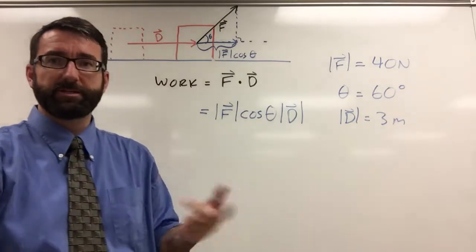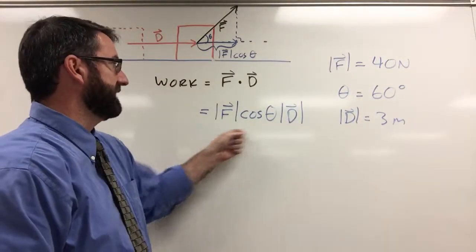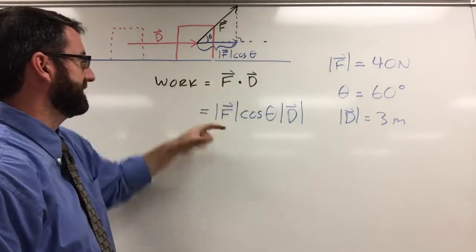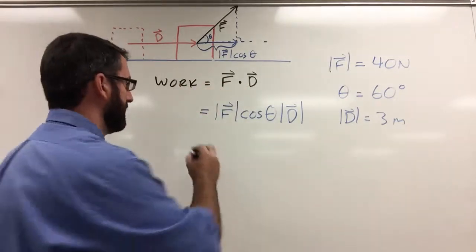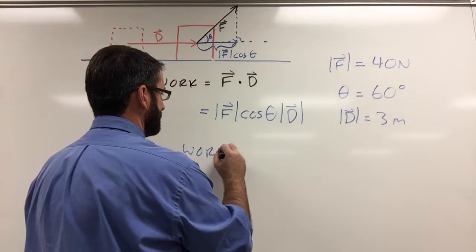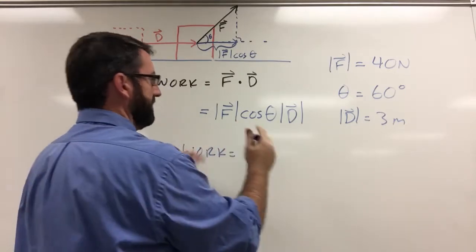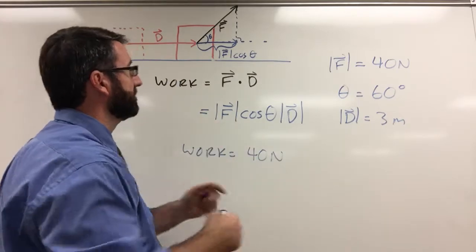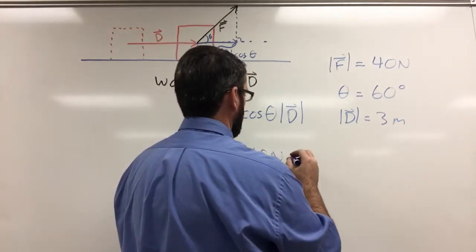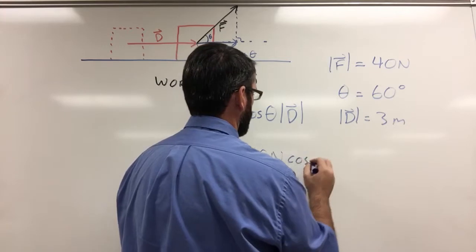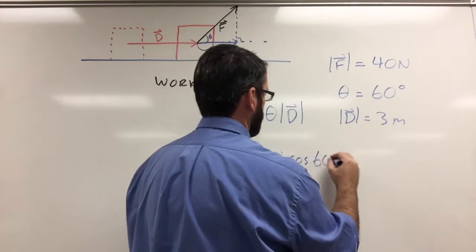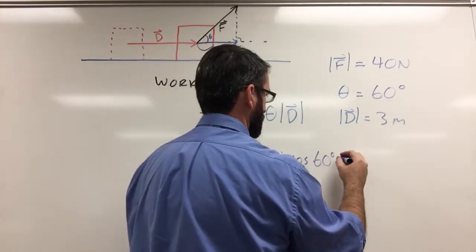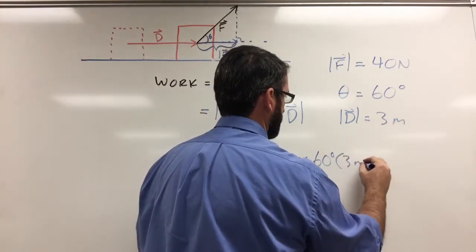And so all we have to do here is just plug these in now that we know that this is the same as this. And this is going to give us our work. So the work involved in this example is going to be 40 newtons, that's the magnitude of our force, times the cosine of 60 degrees times 3, 3 meters.